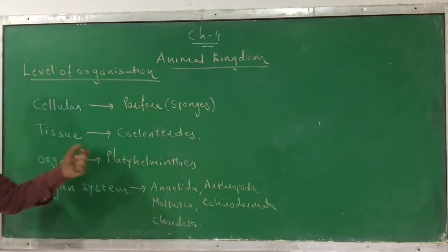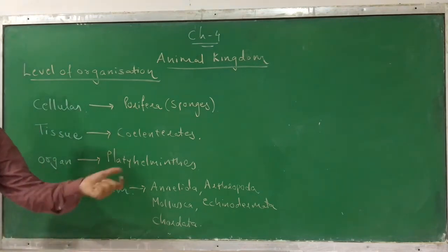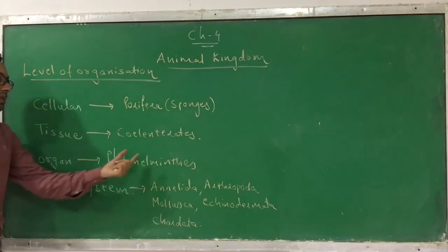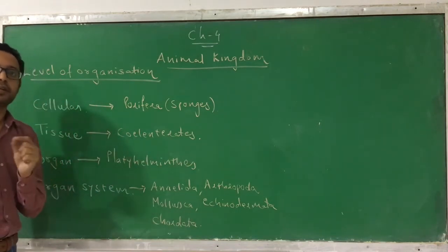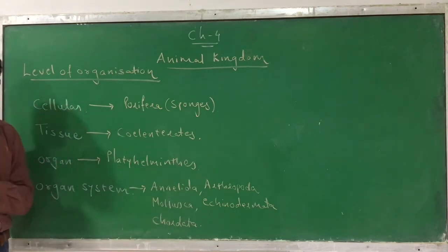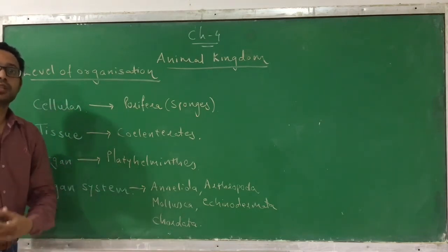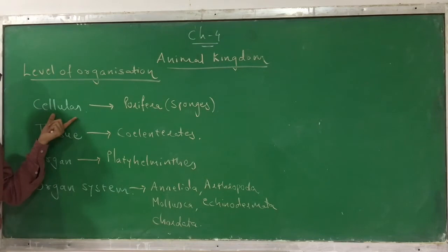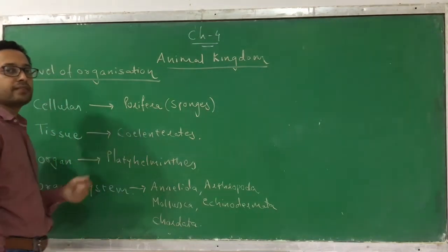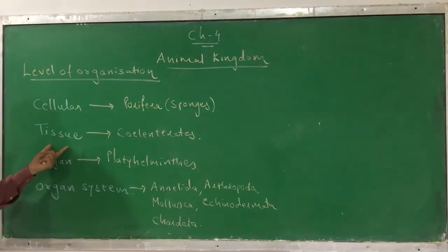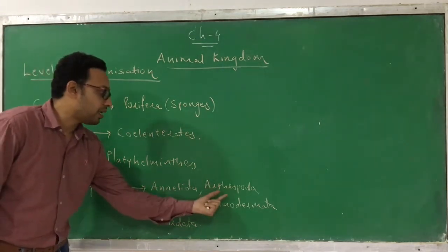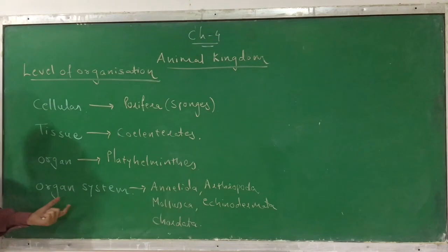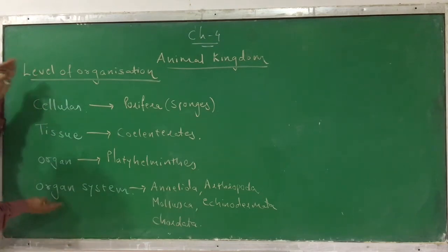Just remember which phylum has which level of organization. If you remember this first lecture, the whole chapter will be very easy for you. You might find it difficult to remember these names for the first time, but when you repeat them 2-3 times it will become easier. Porifera has cellular level, Coelenterata has tissue level, Platyhelminthes has organ level, and Annelida, Arthropoda, Mollusca, Echinodermata, and Chordata have organ system level of organization.